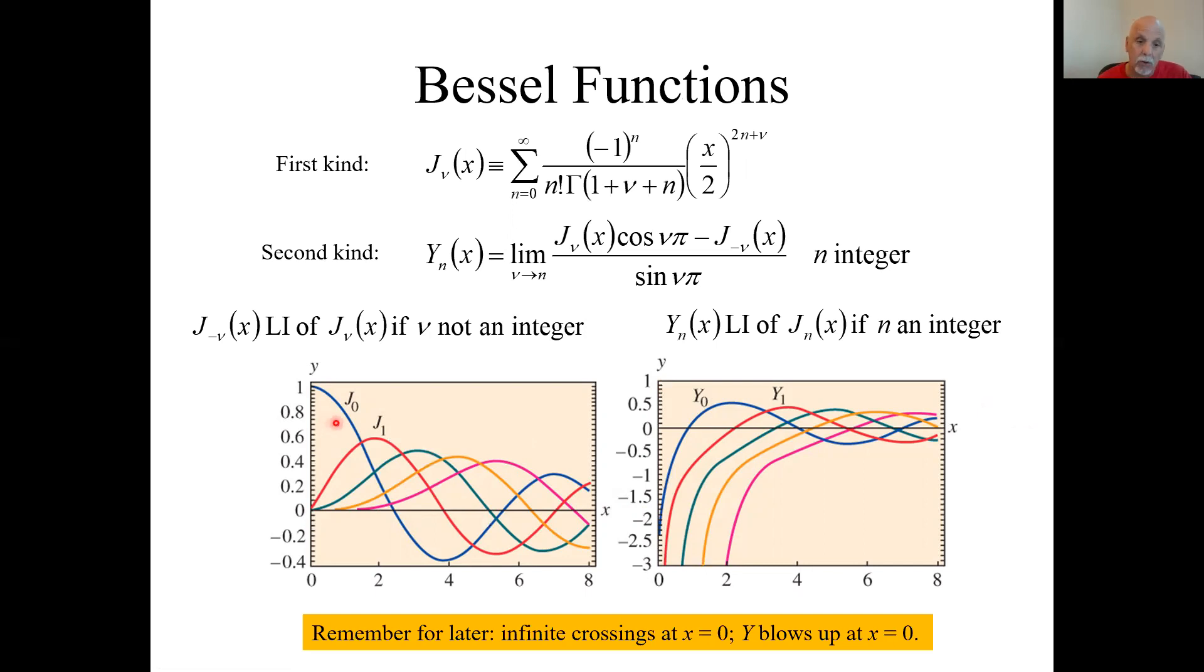Bessel functions of the first kind stay finite or bounded everywhere. Bessel functions of the second kind are unbounded as the argument approaches zero. That will become important later in the course. I say it blows up at x equals zero, that means it's unbounded at x equals zero.